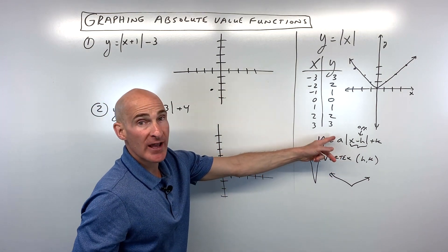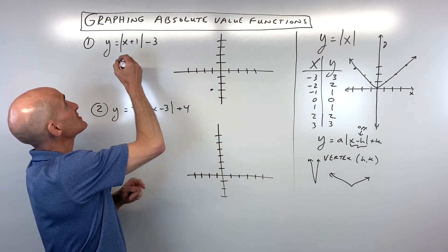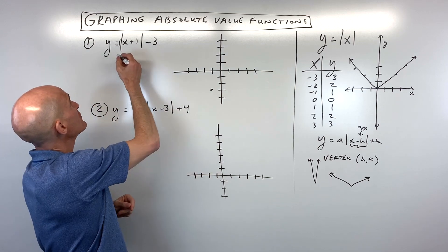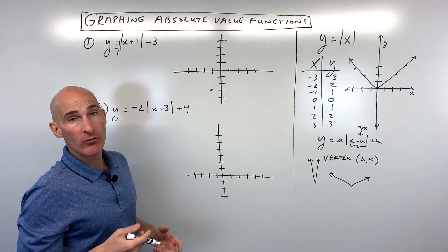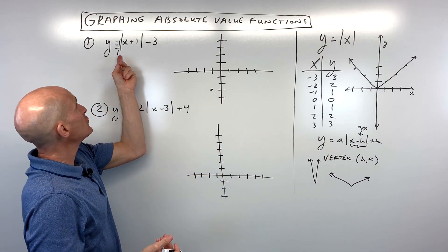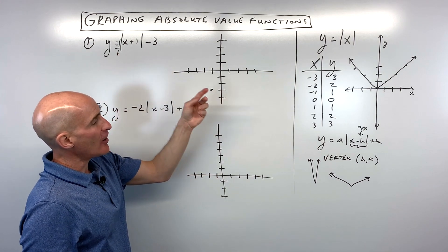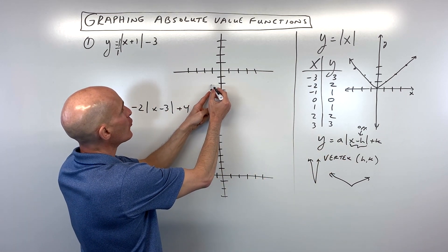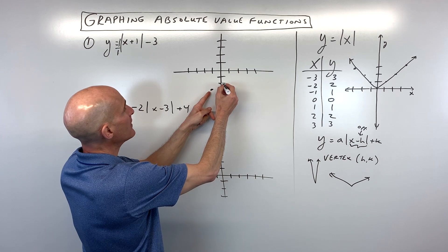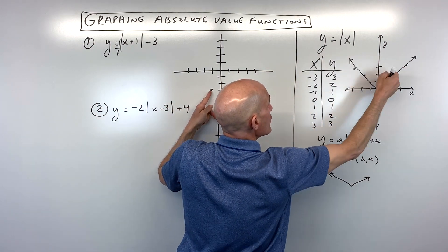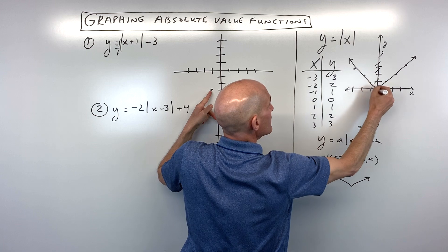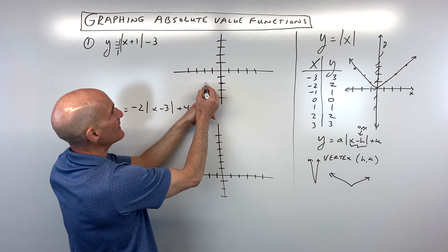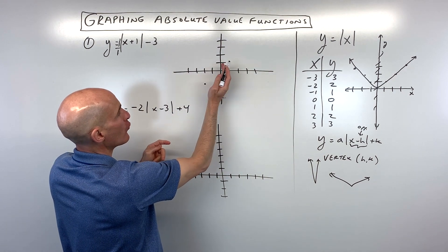And then the a value here, you don't actually see an a value, which means that this is really like one. Because one times anything is itself. So we usually don't write the one, but you can think of it as a one here in front. And one is like one over one, right? Anything divided by one is itself. And the reason I do that is because you can think of this a value like the slope of a line. So if the slope is one, that means from this point we're going to go rise one, run one. And because this absolute value graph is symmetric about this axis of symmetry, if you fold it, it's going to map to itself. Because we went up one and right one, we can also go up one and left one. It's like I'm folding it over the vertex like that.